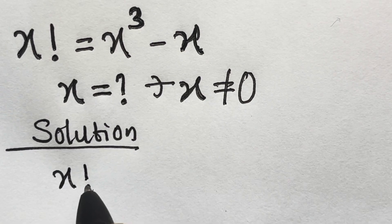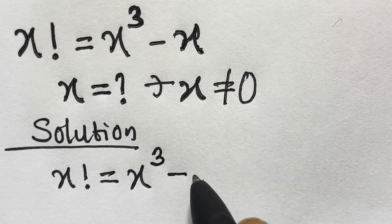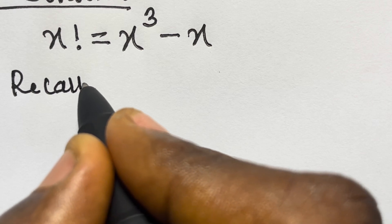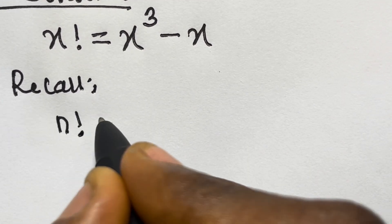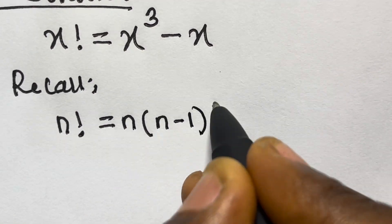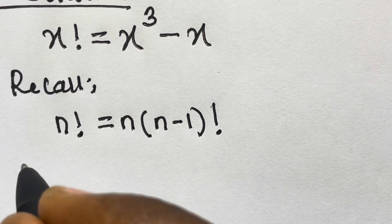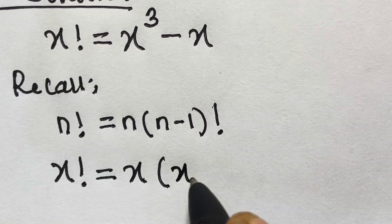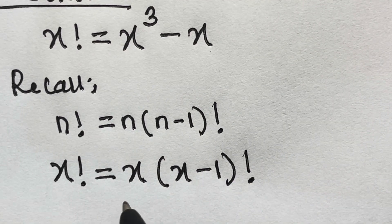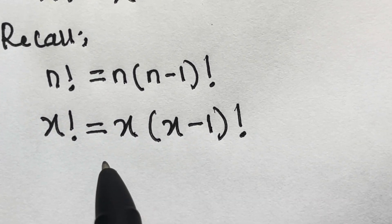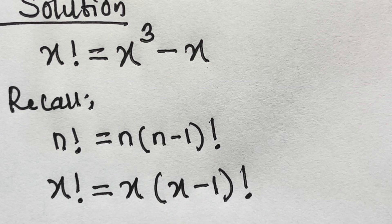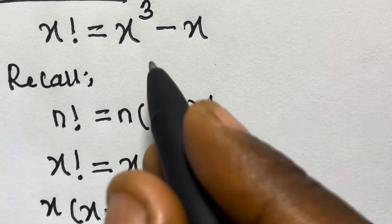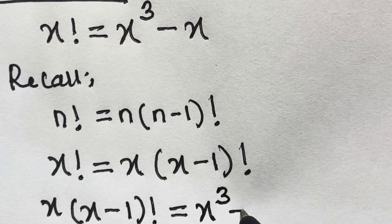We have x factorial equals x raised to the power 3 minus x. Let's recall that when we have n factorial, this equals n multiplied by n minus 1 factorial. So if we apply this here, we are going to have x factorial equals x times x minus 1 factorial. So we have x times x minus 1 factorial equals x cube minus x.